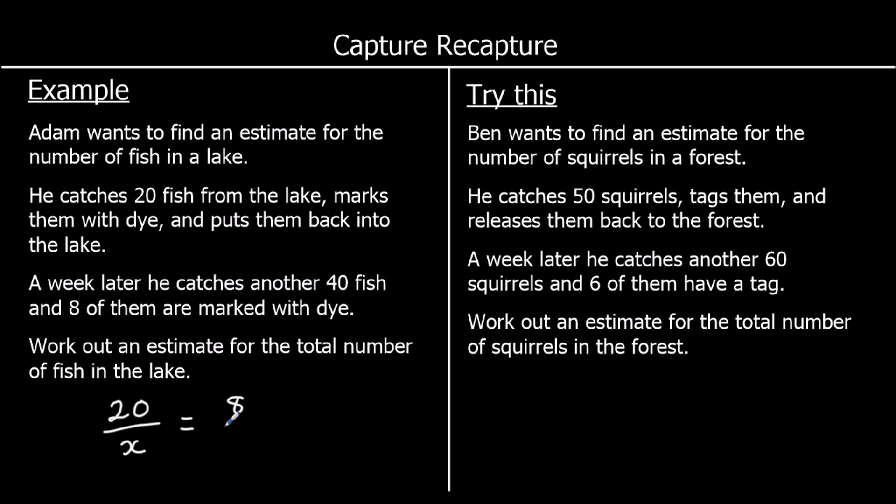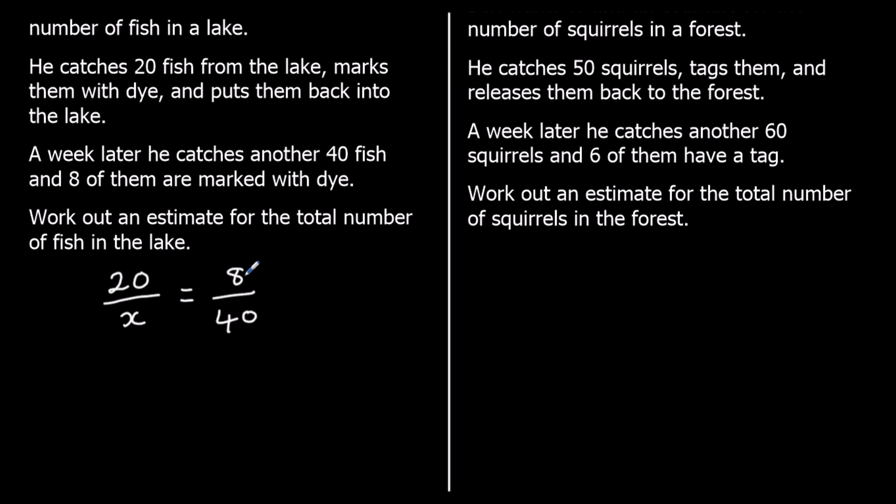So we're going to say that these are equivalent fractions. So how can we find the missing number? How can we find x? So what do we multiply 8 by to get to 20?